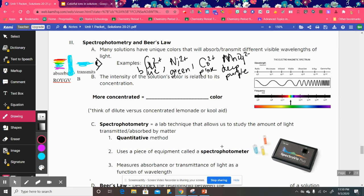Now, the intensity of the solution's color is related to its concentration. So the more concentrated it is, the darker the color is going to be. And that's just because there are more ions available to absorb that light.